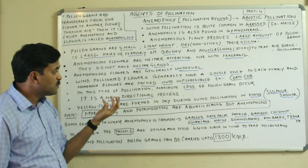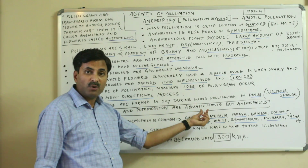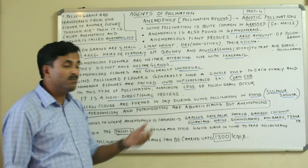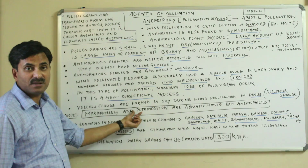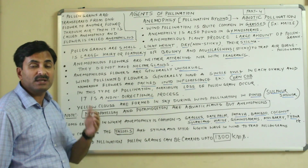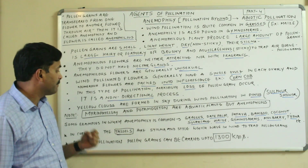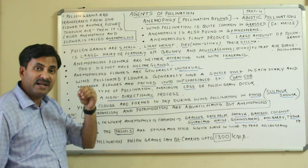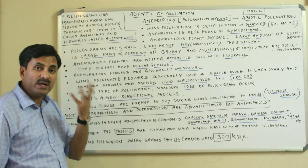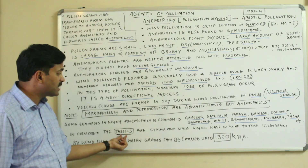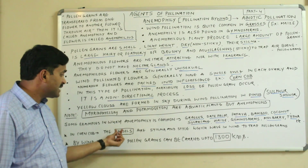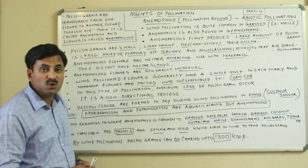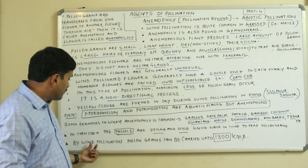Anemophily is normally found in plants growing on land, but some aquatic plants also show anemophily rather than hydrophily. Specifically, Myriophyllum and Potamogeton are aquatic plants that show anemophily instead of hydrophily. Also, in the corn cob of maize, the hair-like structures at one end — called tassels — are actually the stigmas and styles, which wave in the wind to trap pollen grains from the air.